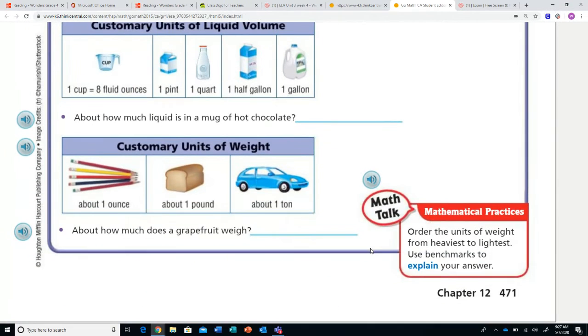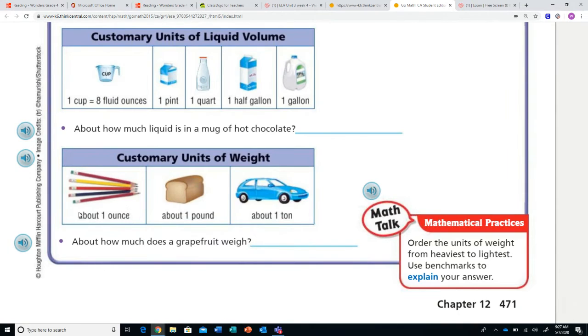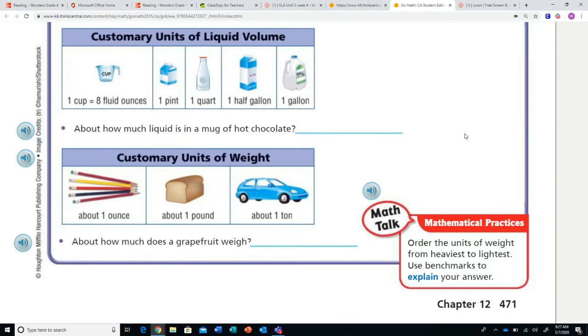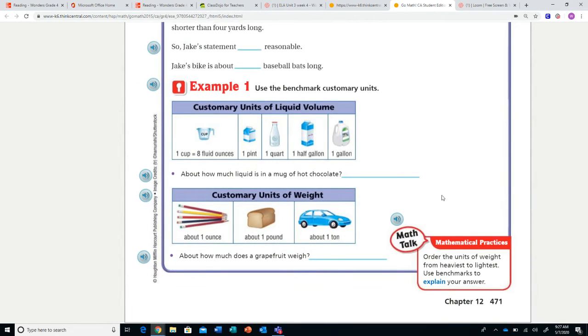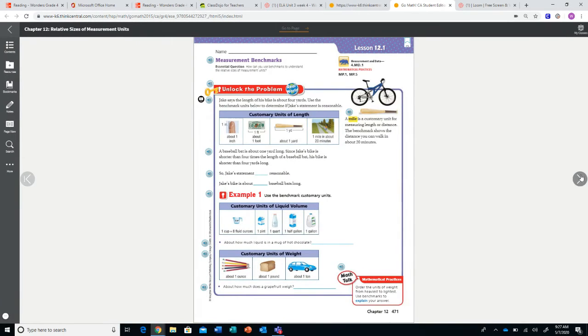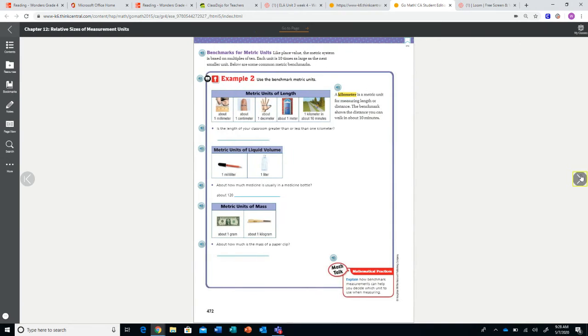Let's look at customary units of weight here. So an ounce is very small, and we would have 16 ounces to equal about one pound. So if you think about what the weight of a single pencil is versus the weight of a loaf of bread versus the weight of a car, how much does a grapefruit weigh? So we're looking at citrus fruit here. So I would say it's probably going to be about one pound. So it's all about using a benchmark to determine the weight of something.